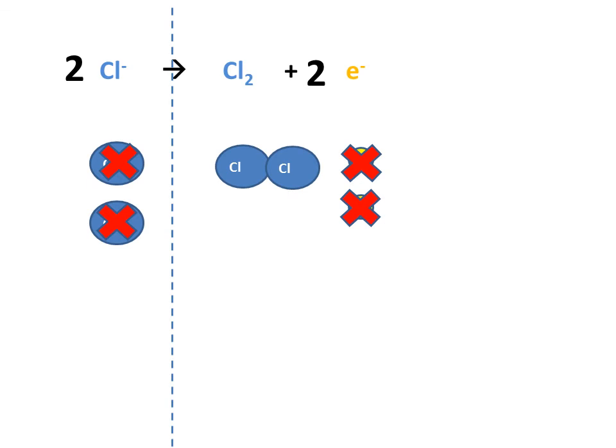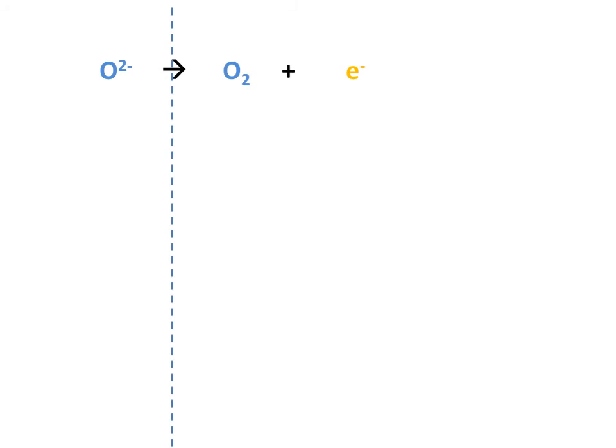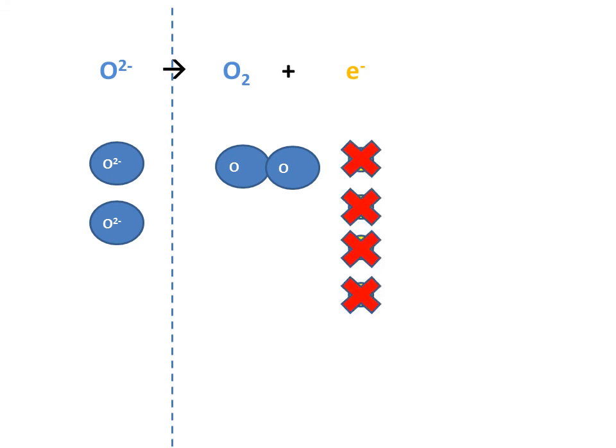Let's try another one. In the case of oxygen, oxygen forms an O2- ion. When it donates electrons, it becomes an oxygen atom. Oxygen also exists as a diatomic molecule. This means the reaction needs to happen twice, so I need two oxygen ions. Each ion donates two electrons. This means I have four electrons donated.